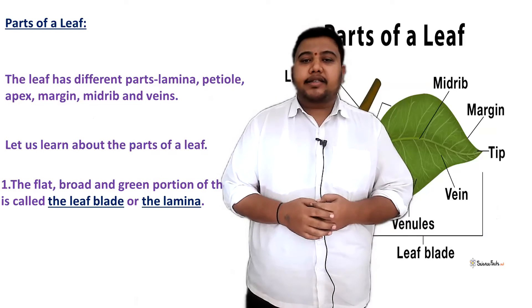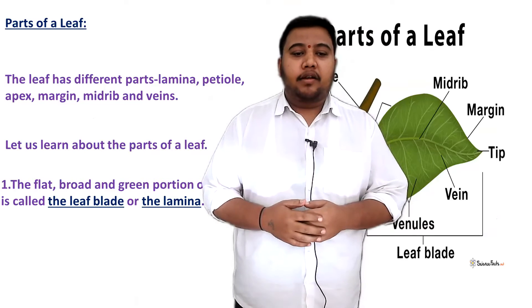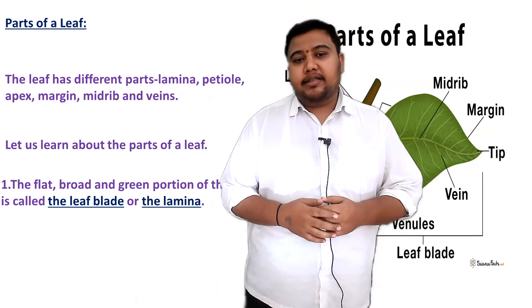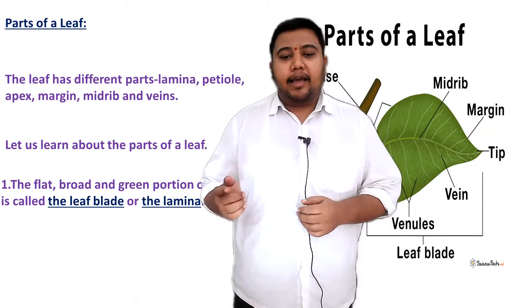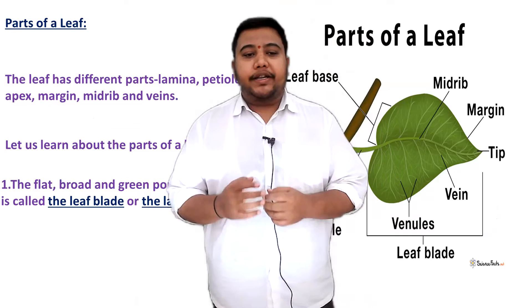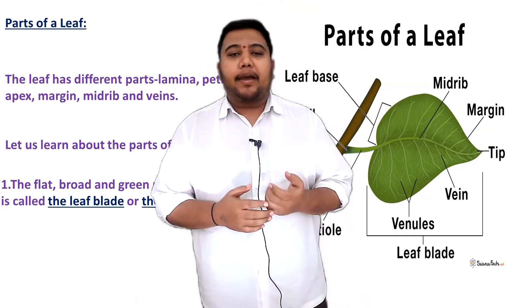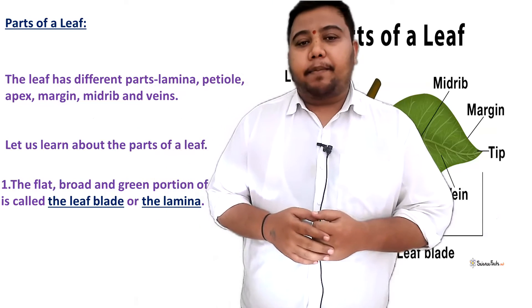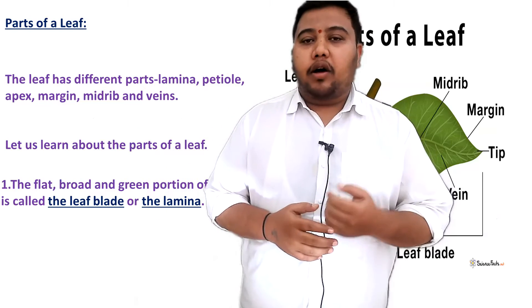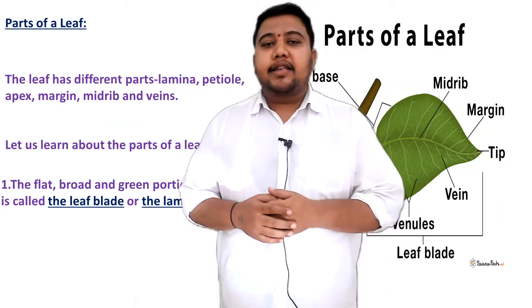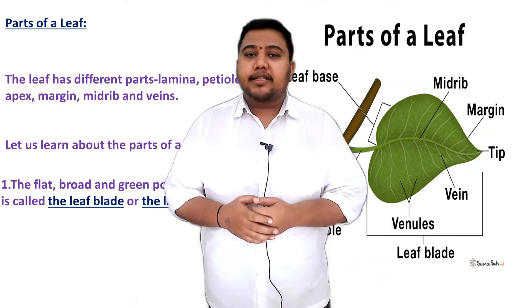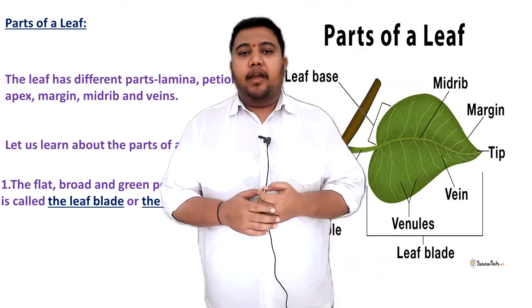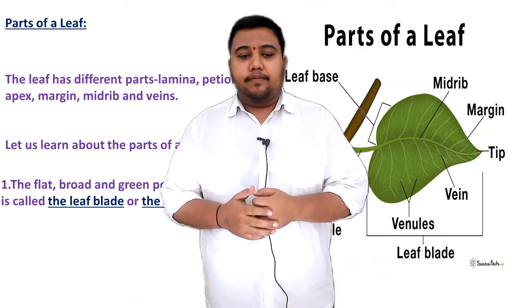Now we will discuss about the parts of the leaf. The leaf has different parts: lamina, petiole, apex, margin, and midrib — also called veins. We will discuss about each part of the leaf in detail.